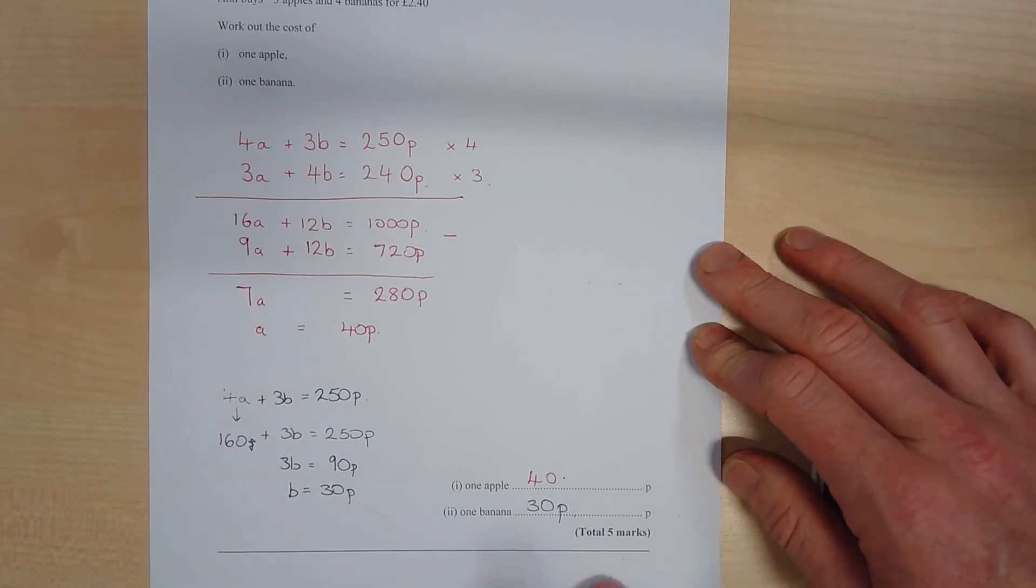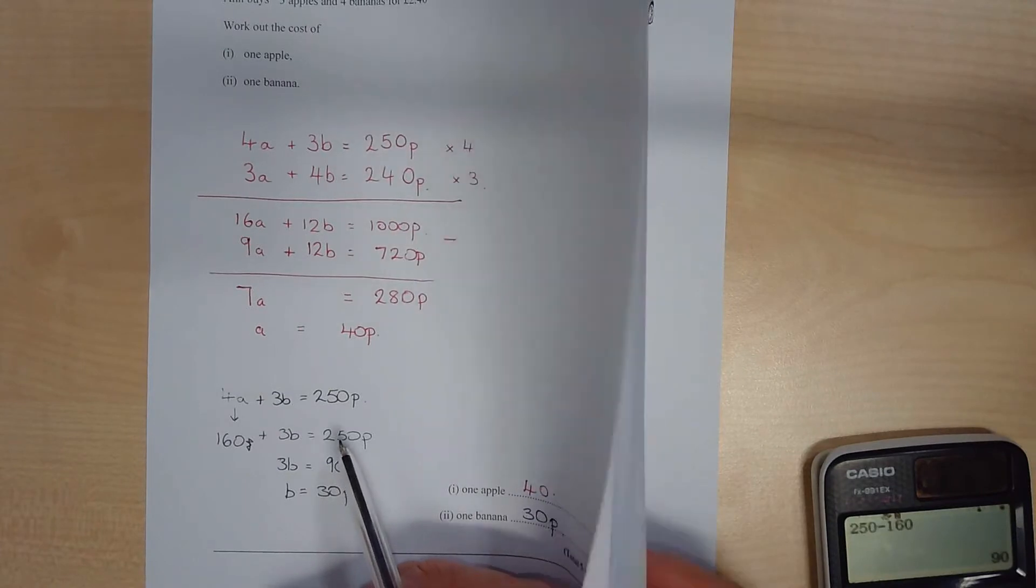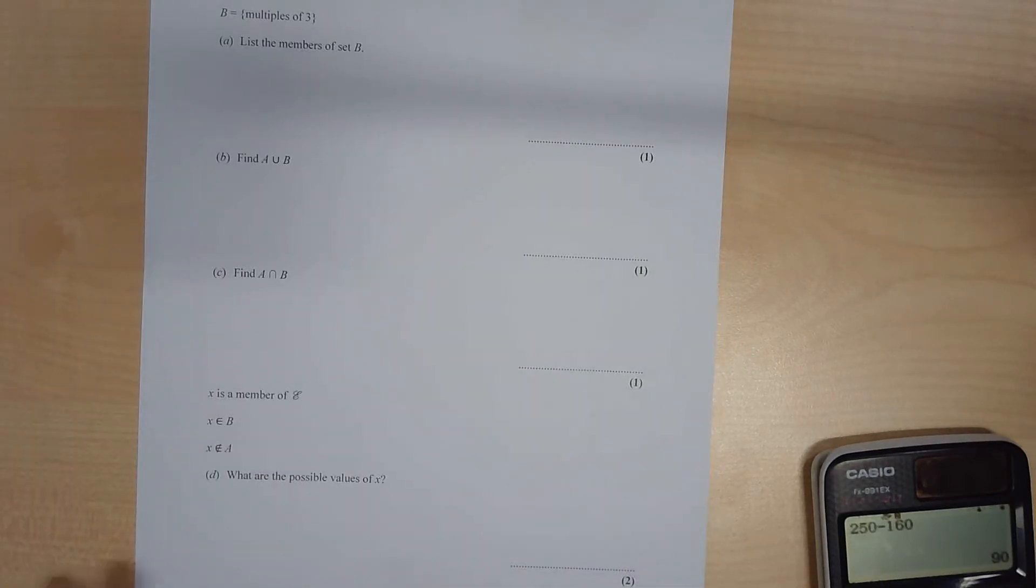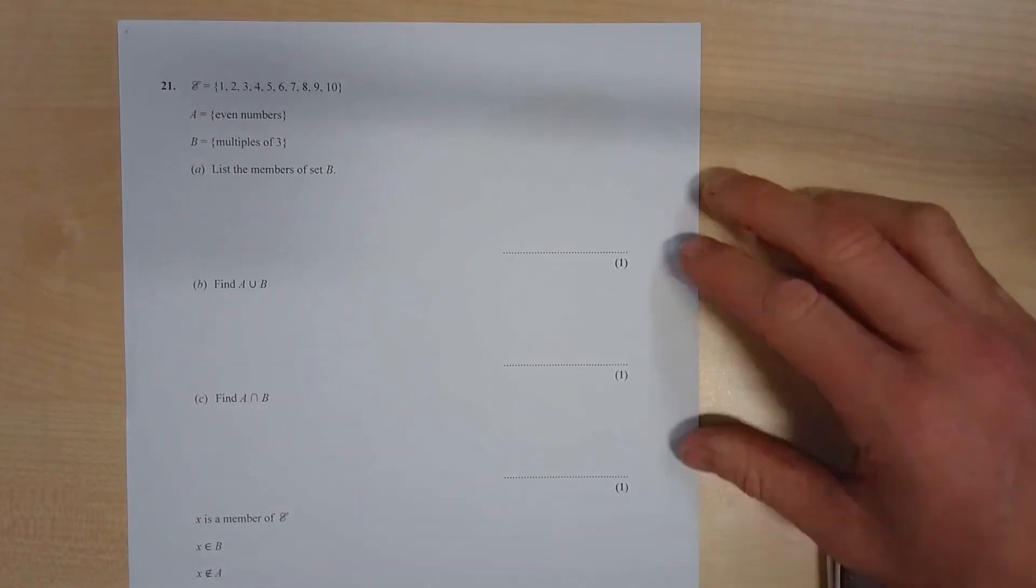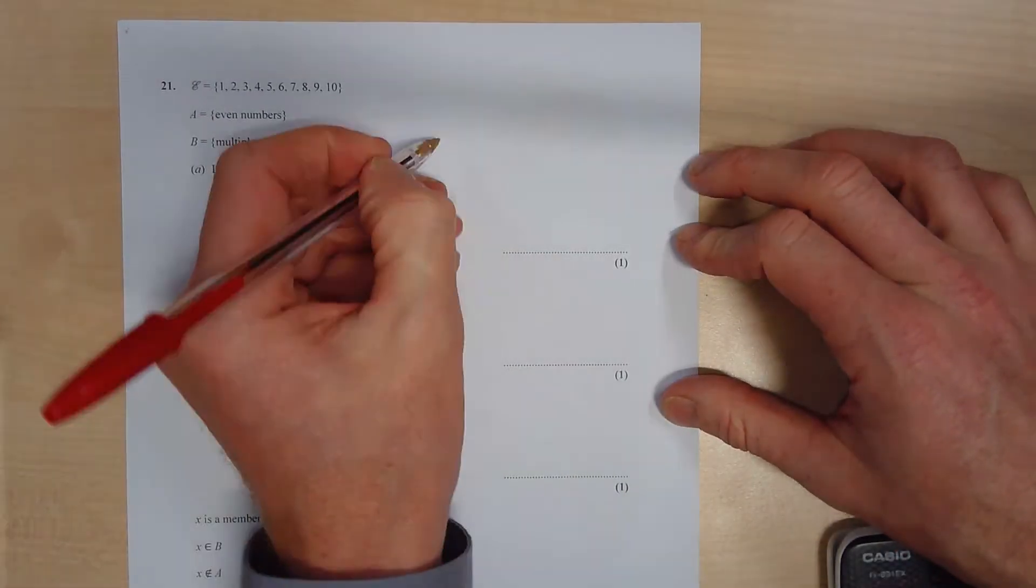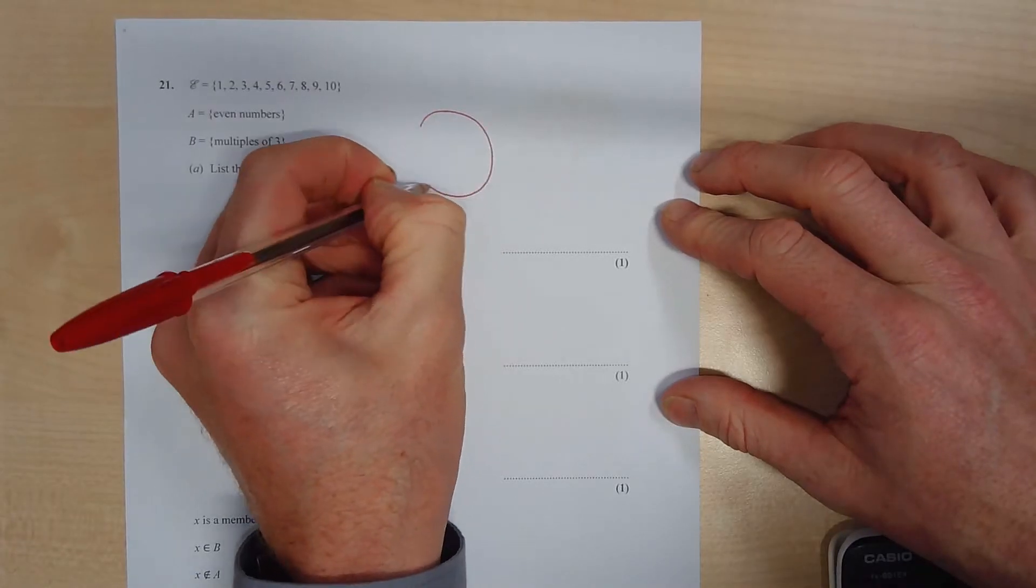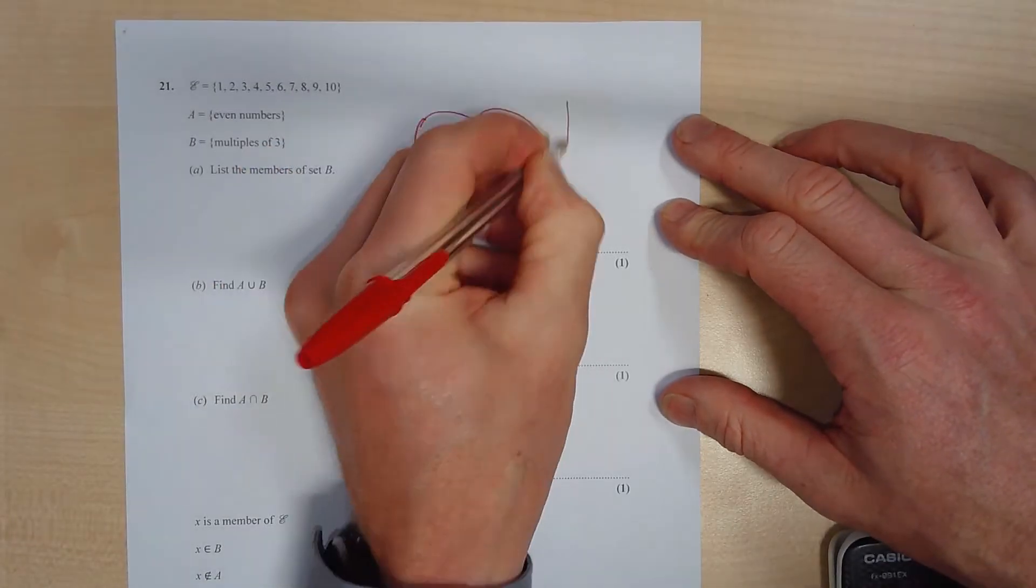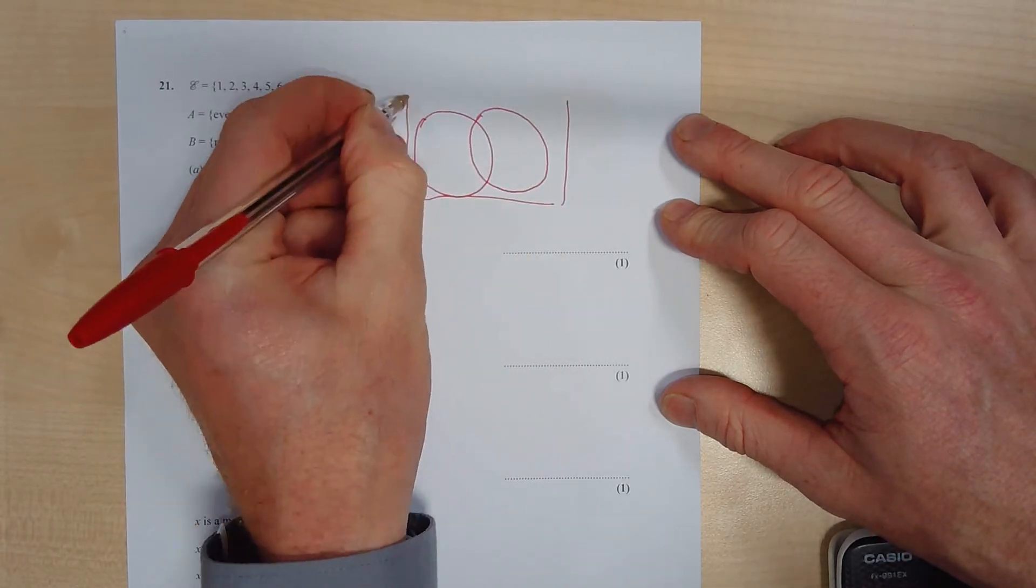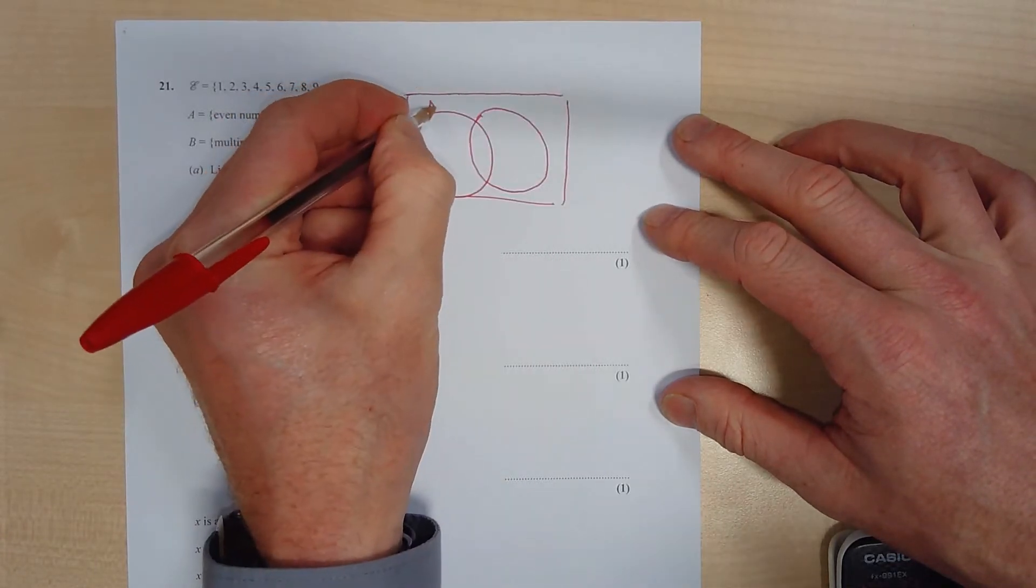So set them up, balance the bananas, subtract, and once you've found one, go away and find the other. That might be 5 marks. Okay, question 21 looks like this. I'm going to draw a Venn diagram for this.